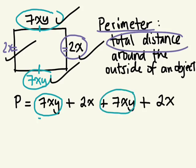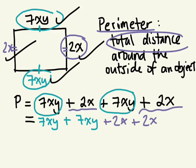7xy. So what's 7xy? We're going to add 7xy plus 7xy. And then what do we need to add together? 2x and 2x. So now we're just going to simplify this. Once we've combined the like terms, we can add them together.